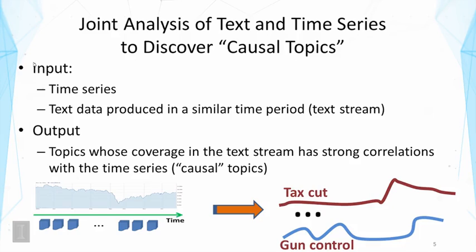The output contains topics just like in topic modeling, but we hope these are not just regular topics. These topics don't just have to explain the text data best — they have to represent meaningful, semantically coherent topics in text, and more importantly, they should be correlated with the external time series given as context.